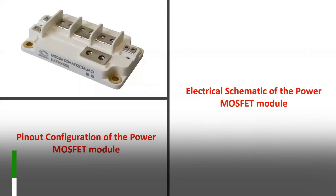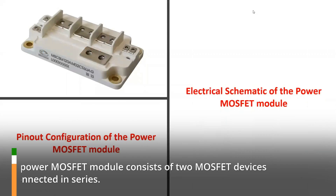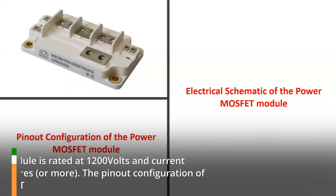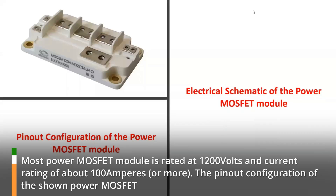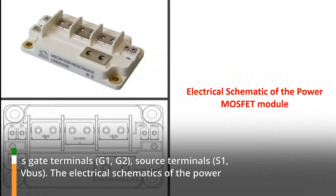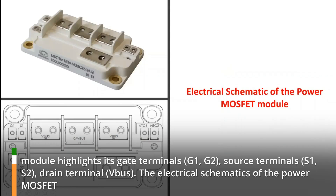A power MOSFET module consists of two MOSFET devices connected in series. Most power MOSFET modules are rated at 1200 volts and a current rating of about 100 amperes or more. The pinout configuration of the shown power MOSFET module highlights its gate terminals G1 and G2, source terminals S1 and S2, and drain terminal bus.